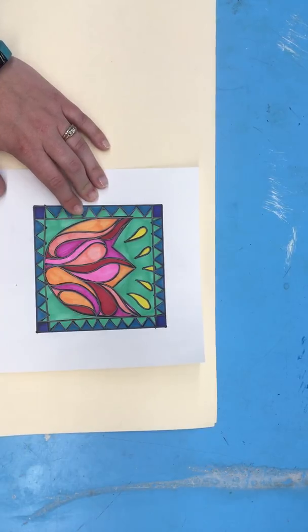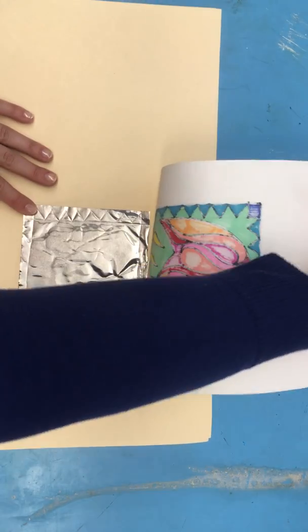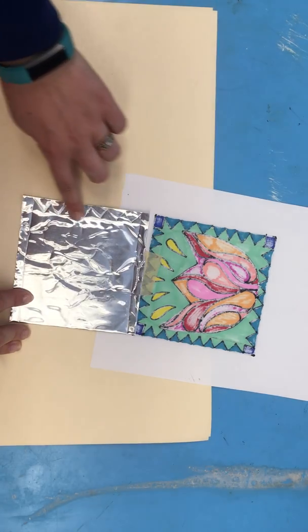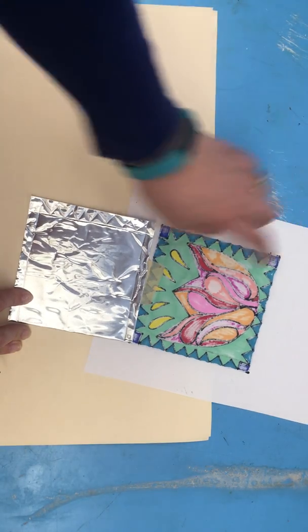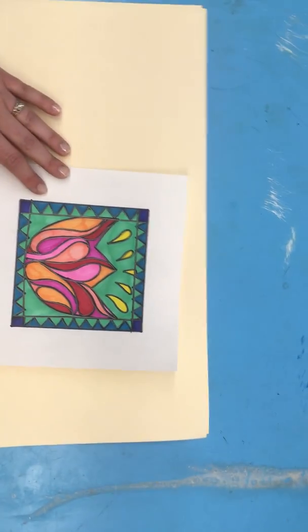As you trace over all of your black sharpie lines, you can check the silver foil. And you'll see that it's starting to make an indent where you've traced over. But don't remove the tape because you won't be able to get it to line back up.